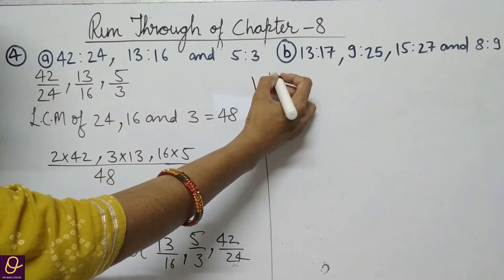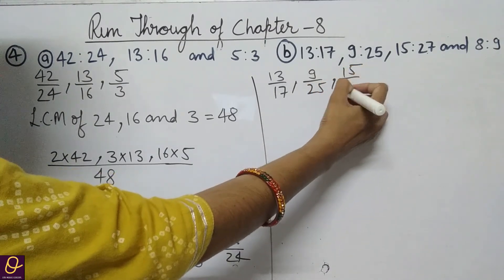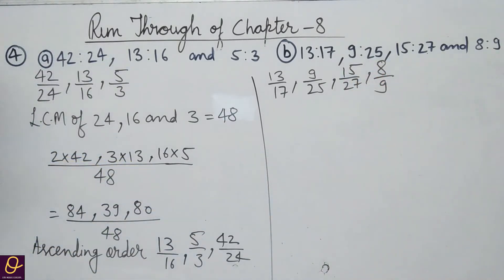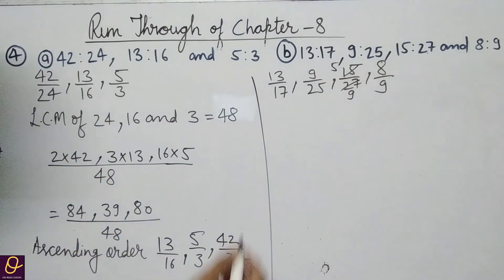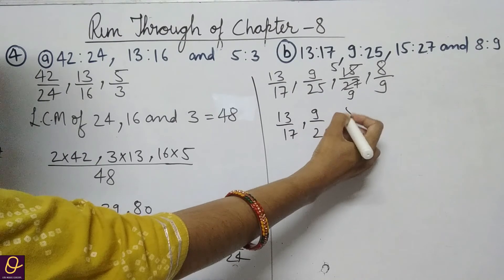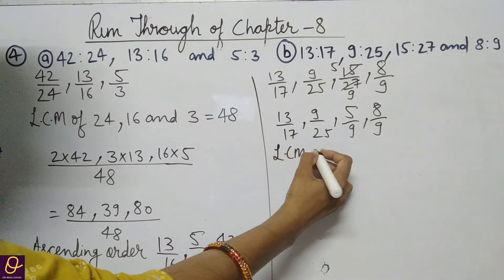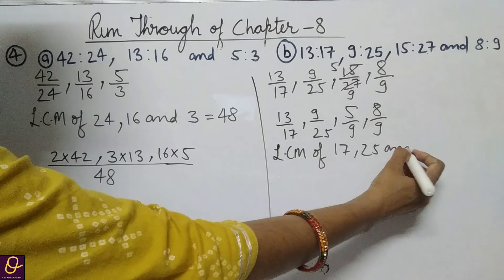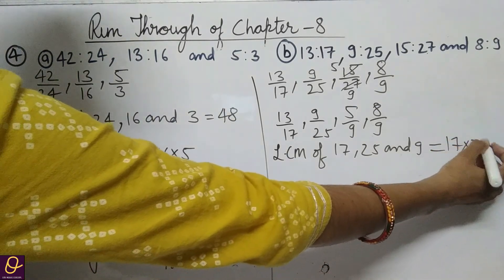Now part B. We write the fractions: 13 by 17, 9 by 25, 15 by 27, and 8 by 9. We will take the LCM of the denominators 17, 25, and 9, multiplying all three together: 17 into 25 into 9.